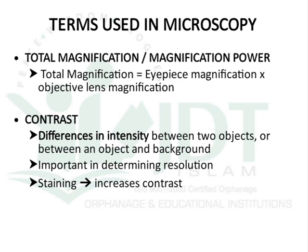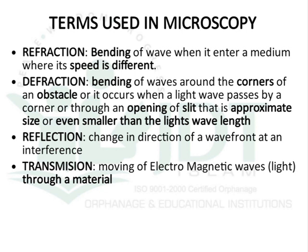The next term is contrast, which means the difference in intensity between two objects or between an object and its background. The staining process is used to increase contrast, giving a colored microorganism or object against an uncolored background. Contrast is also an important factor that determines the resolution power of a microscope. Refraction is the bending of a wave when it enters a medium where its speed is different — it occurs when light transfers from air to glass, glass to air, or glass to oil.